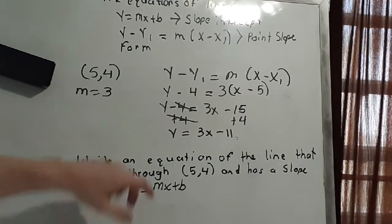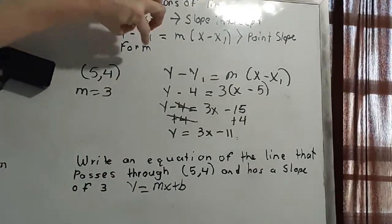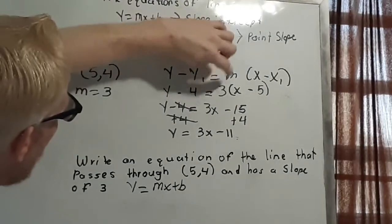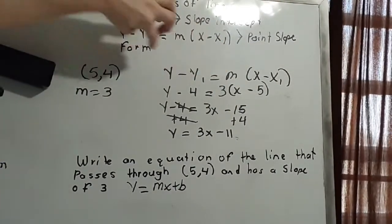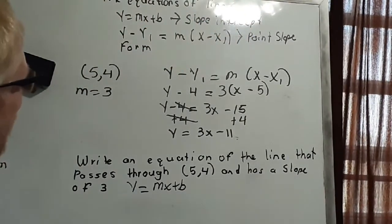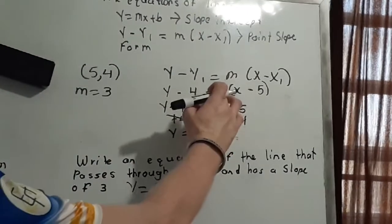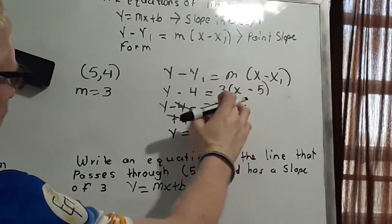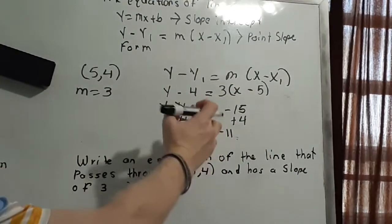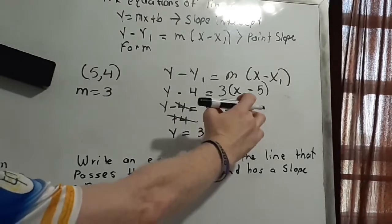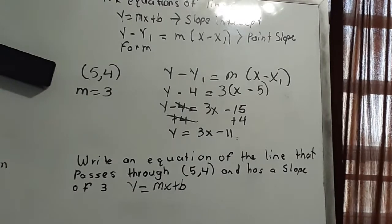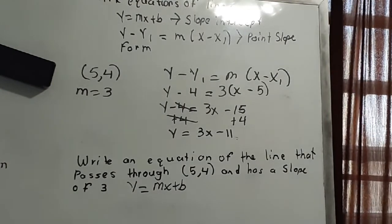I couldn't use slope-intercept form, so I used the point-slope form and plugged in the given numbers. Instead of m I wrote 3, instead of y-sub-1 I wrote 4, and instead of x-sub-1 I wrote 5. I multiplied 3 times x to get 3x, and 3 times negative 5 to get negative 15. Then I added 4 to both sides: negative 15 plus 4 is negative 11, giving y equals 3x minus 11.